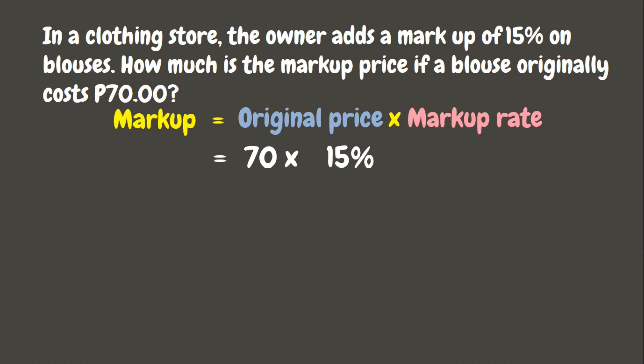Before we can multiply, we need to change the percent into a decimal. To change percent into decimal, first change the percent sign into a decimal point, and then move the decimal point two times to the left — one, two. There you go. Now let us multiply 70 times 0.15.